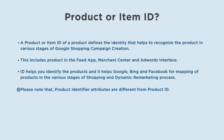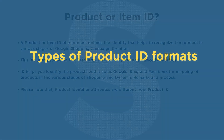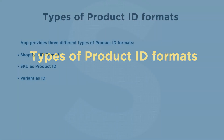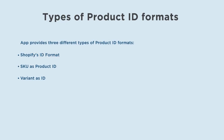Please note that product identifier attributes are different from product ID. The app provides three different types of product ID formats: Shopify's ID format, SKU as Product ID, and Variant as ID.